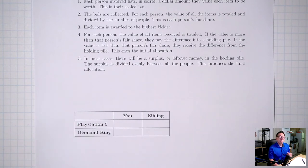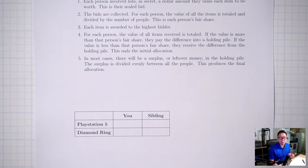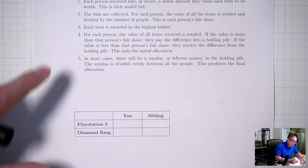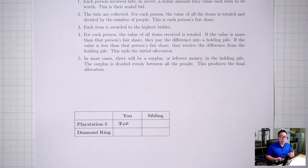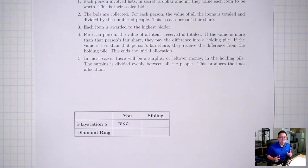PlayStation 5 — I know it costs $500, but it's hard to get right now and sold out everywhere. I really want one, so maybe it's worth more than $500 to me — say $700. It's important to note this is not how much I would be willing to pay, because the PlayStation 5 is given to us. We just have to figure out how to share it. This is just how much I would value it.